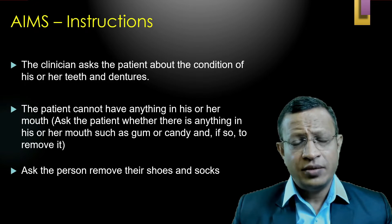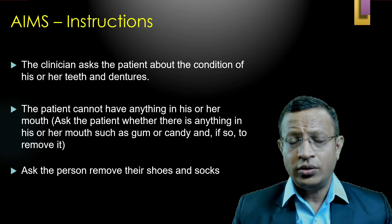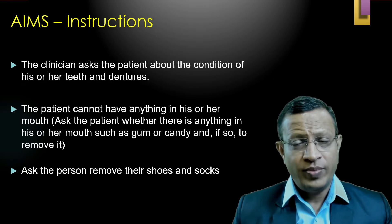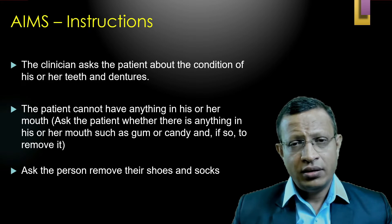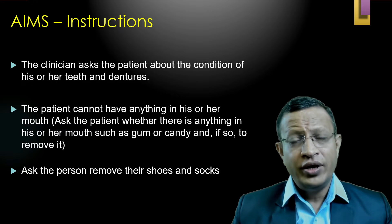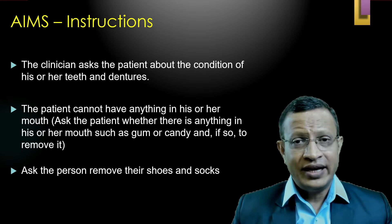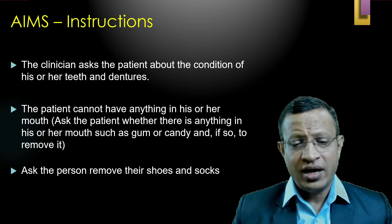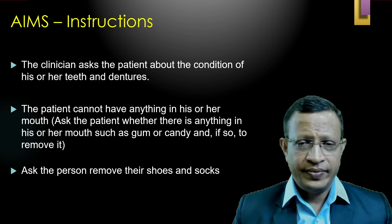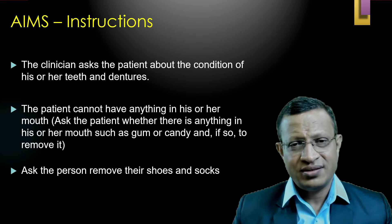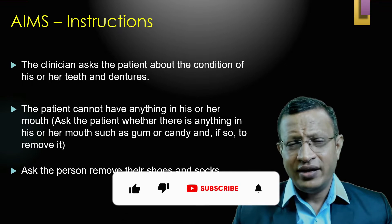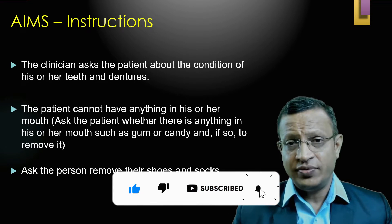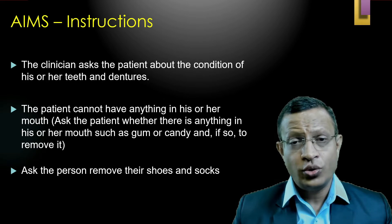First and foremost, the clinician asks the patient about the condition of his teeth or dentures — do you have any problem with your teeth, do you have any dentures? The patient should not have anything in his mouth such as bubble gum, chewing tobacco, or any such items; ask the patient to spit it out. He should not be wearing dentures. At the same time, ask the patient to remove his shoes and socks — this is very important. If a patient has tardive dyskinesia in the limbs, it is invariably seen in the toes or fingers, so socks and shoes need to be removed.